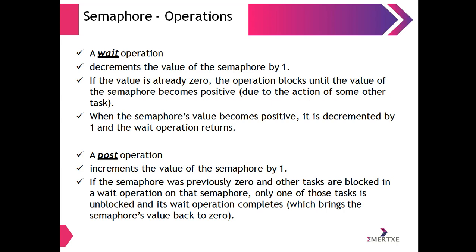The operations on a semaphore are: first, the wait operation, which decrements the value of the semaphore by 1. If the value is already 0, the operation blocks until the value becomes positive due to the action of some other task. When the semaphore's value becomes positive, it is decremented by 1 and the wait operation returns. A post operation increments the value of the semaphore by 1. If the semaphore was previously 0 and other tasks are blocked in a wait operation, only one of those tasks is unblocked and its wait operation completes, bringing the semaphore's value back to 0.